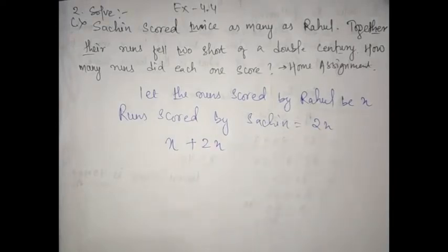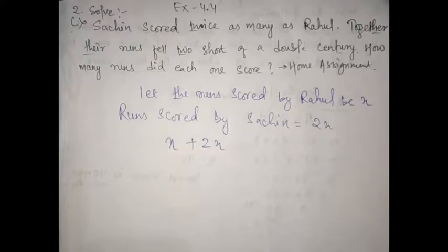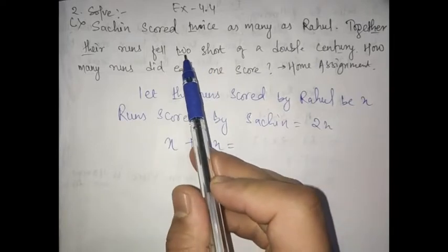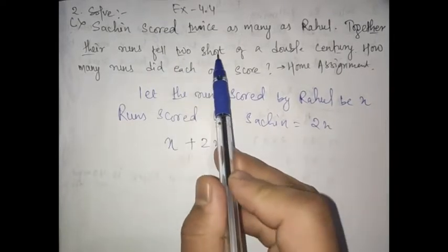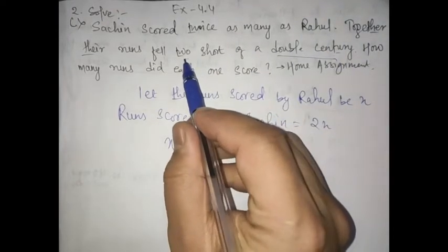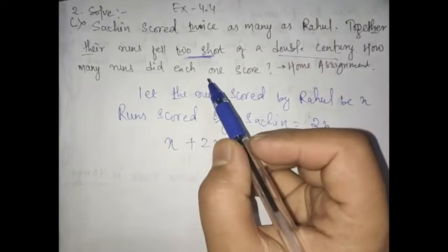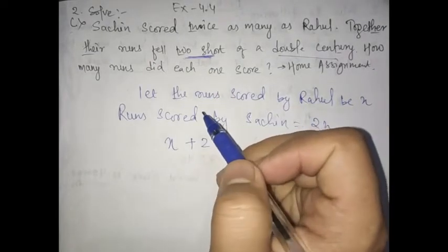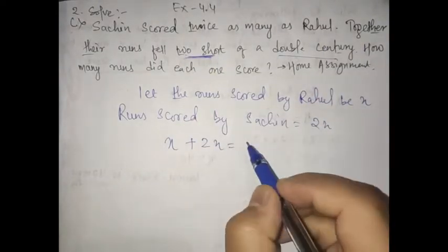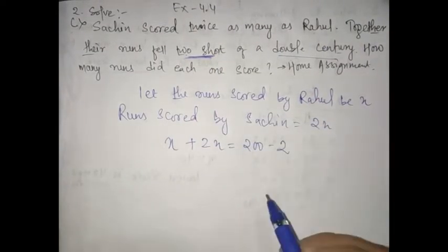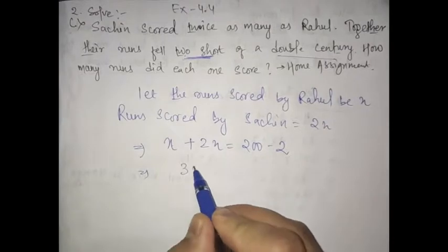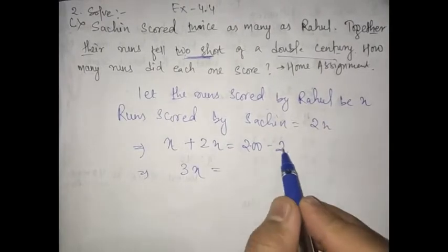Together, their runs fell too short of a double century. So whenever we count them together it will be X plus 2X. The question is: runs fell too short means to reach double century they were less by 2 runs. How many runs did each one score — that you have to find.